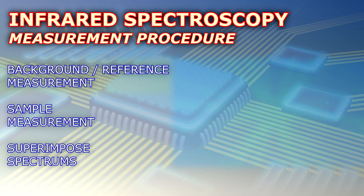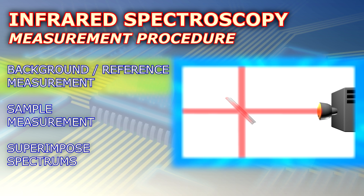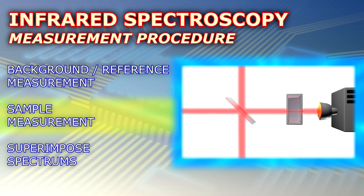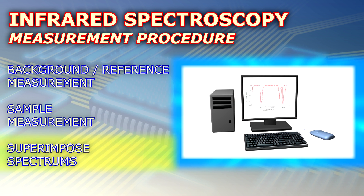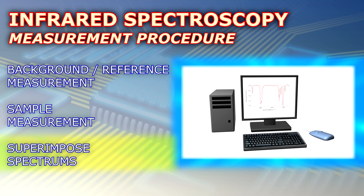In order to study a substrate, an interferogram of the background is recorded first, and then the interferogram of the radiation that was transmitted through the sample. These interferograms are then converted into spectra, and combined in order to see what wavelength radiation was absorbed by the substrate.